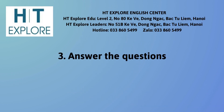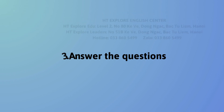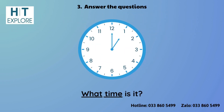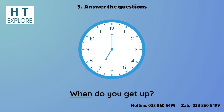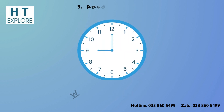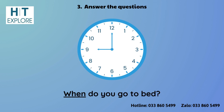Activity 3: Answer the questions. What time is it? 2 o'clock. What time is it? 3 o'clock. When do you get up? 6 o'clock. What time is it? 1 o'clock. When do you go to bed?